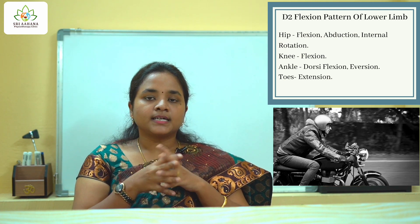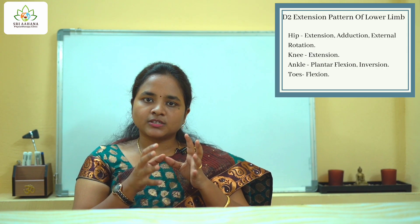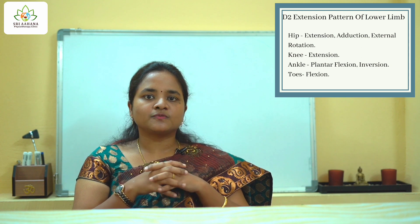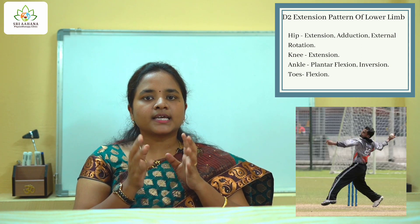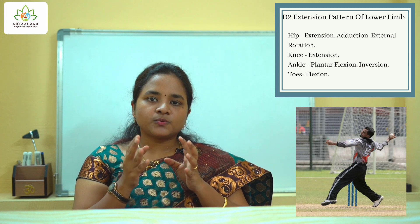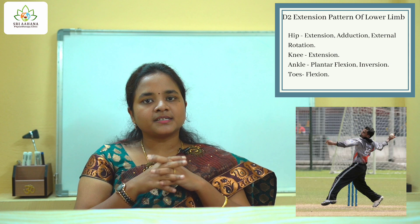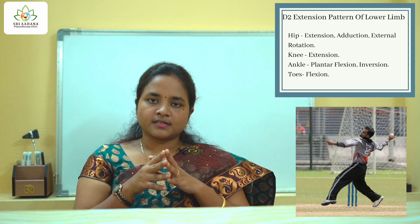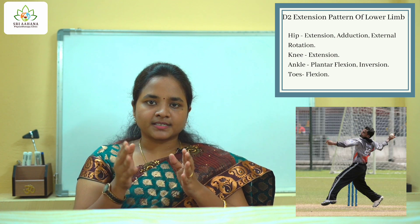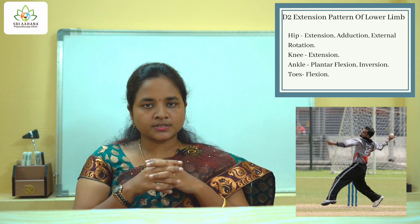You can try sitting on a bike and write down the pattern for yourself. Now talking about the D2 extension pattern, I'm going to give you the example of doing bowling. When you do bowling, your rear leg will follow the D2 extension pattern. In this pattern, your hips will remain in extension, adduction, and external rotation; your knee joint will be in extension; and your ankle will undergo plantar flexion and inversion.